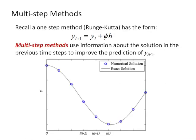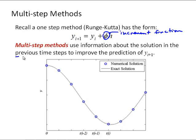Recall a one-step method, like the Runge-Kutta methods we've been looking at, has the form y_i+1 = y_i + phi times h, where phi is the increment function and it may involve function evaluations at intermediate points between i and i+1. Multi-step methods realize that once the integration of the ODE has started, we have information about previous time steps that we could possibly use to improve the prediction of y_i+1.